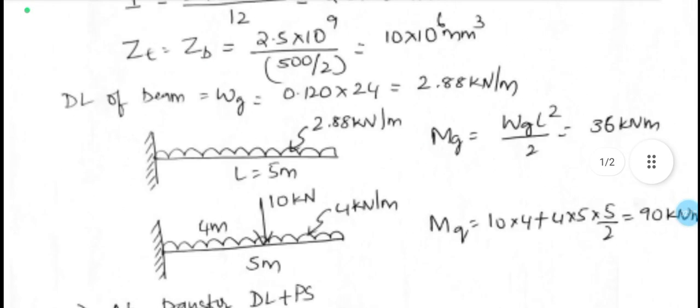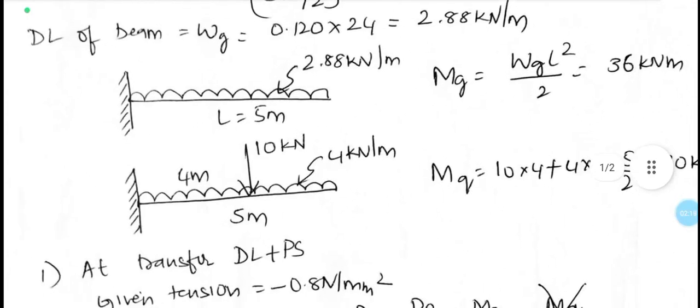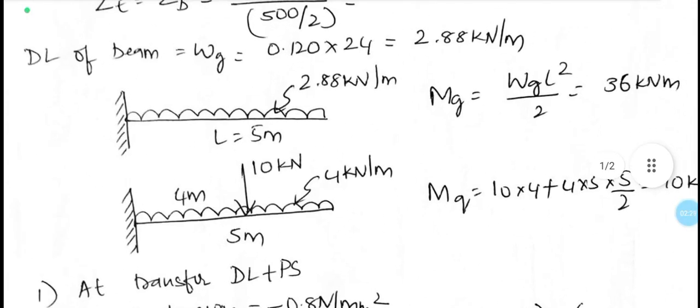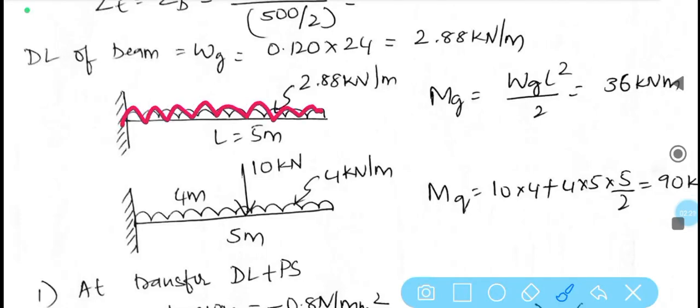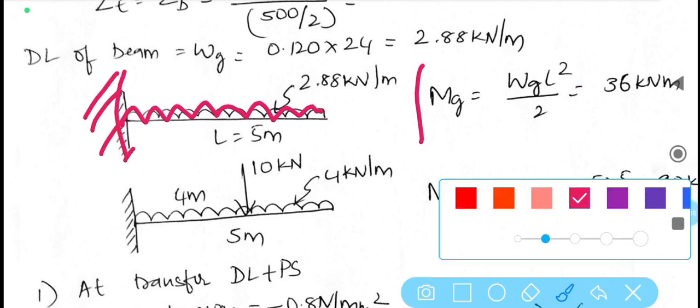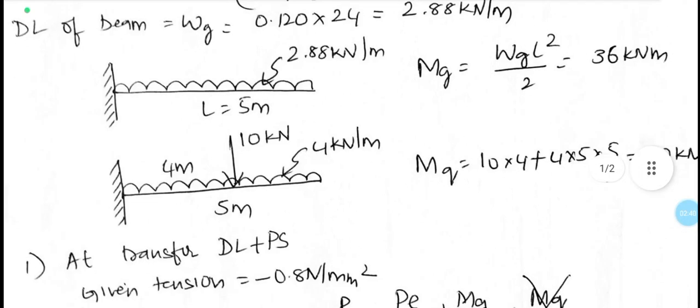We need to find out the bending moments for both dead load case and live load case. For the dead load case, only UDL is expected to act and therefore the ready expression for cantilever beam WL square by 2 can be applied and computed.